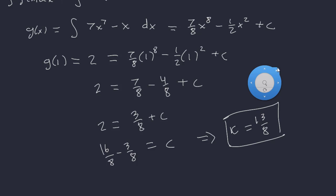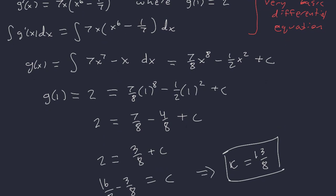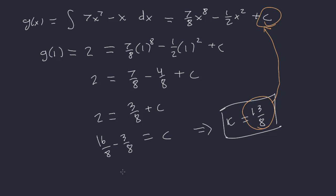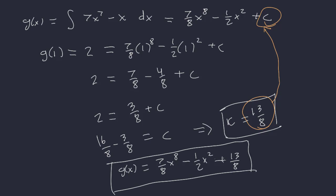Moving 3/8 over: C equals 16/8 minus 3/8, which is 13/8. This shows that C is not always the initial value directly — a common mistake is assuming C always equals that number, but it won't. So our final answer is g of x equals 7/8 x to the eighth minus 1/2 x squared plus 13/8.